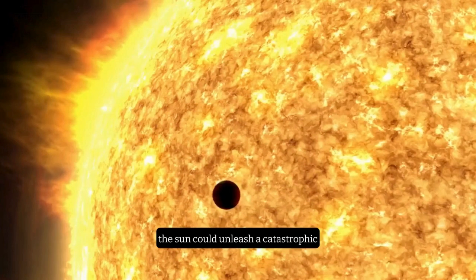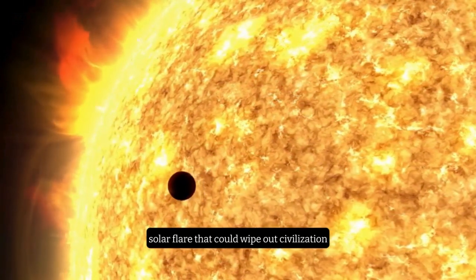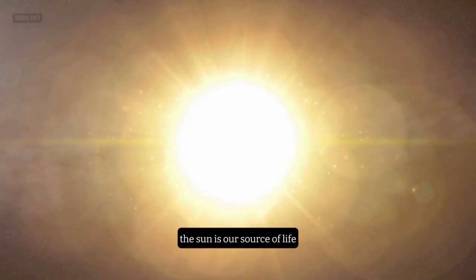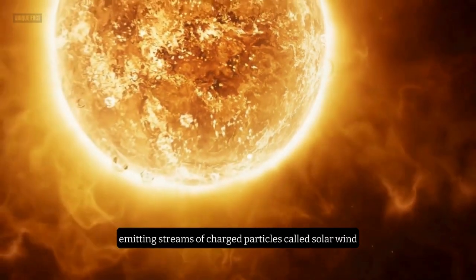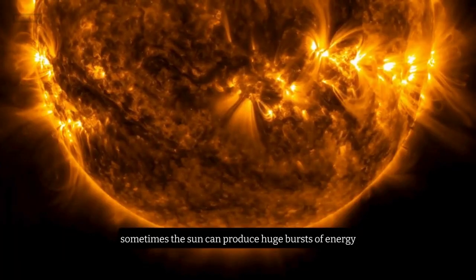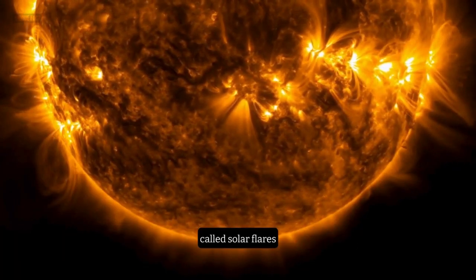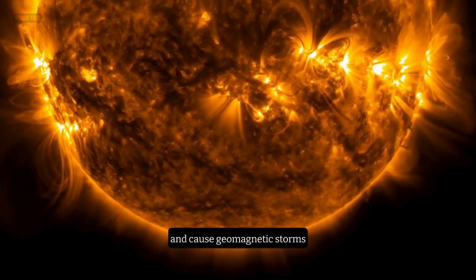Fact number 3. The sun could unleash a catastrophic solar flare that could wipe out civilization. The sun is our source of life, but it can also be our worst enemy. The sun is constantly emitting streams of charged particles, called solar wind, that interact with the Earth's magnetic field. Sometimes, the sun can produce huge bursts of energy, called solar flares, that can disrupt the solar wind and cause geomagnetic storms.